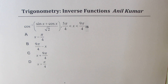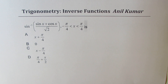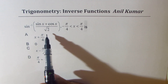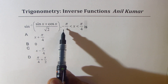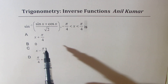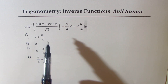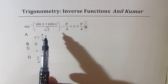You can copy this question. Remember, cos inverse is defined in the domain of 0 to π. The second question is: sine inverse of (sin x + cos x) over √2, where x is between −π/4 and +π/4. Four options are given, so let me begin with this one — we'll follow exactly the same method to do both.